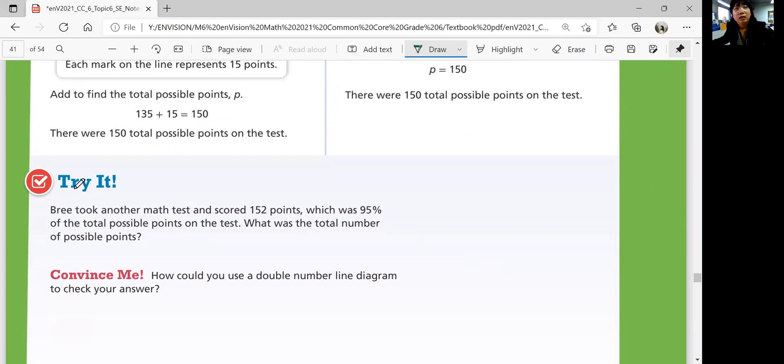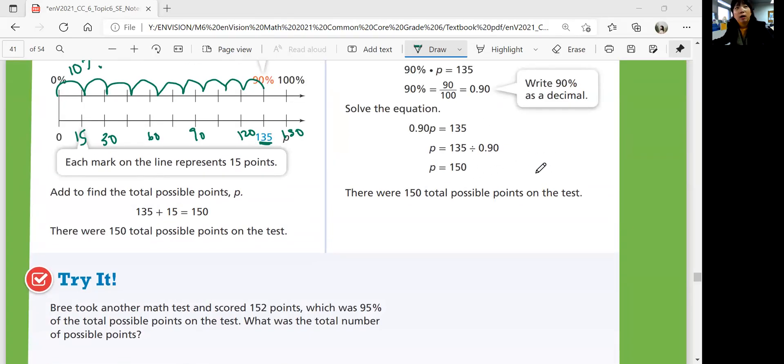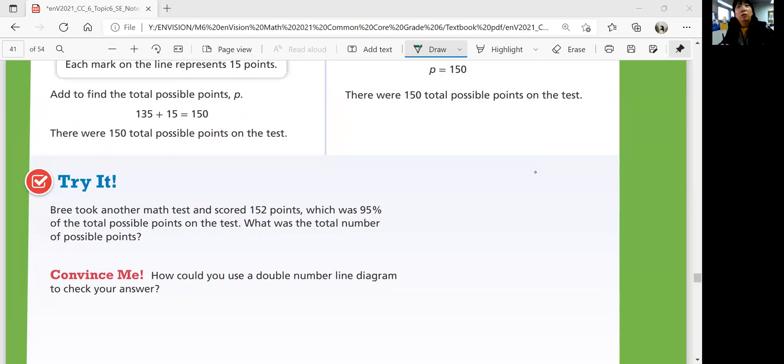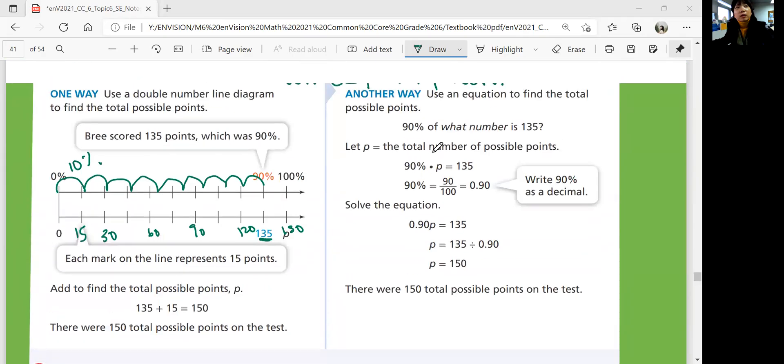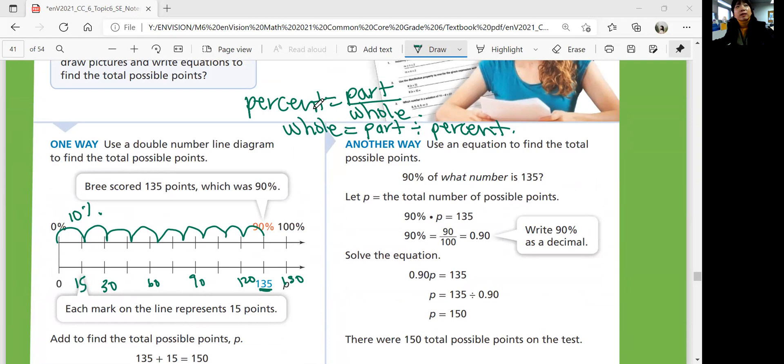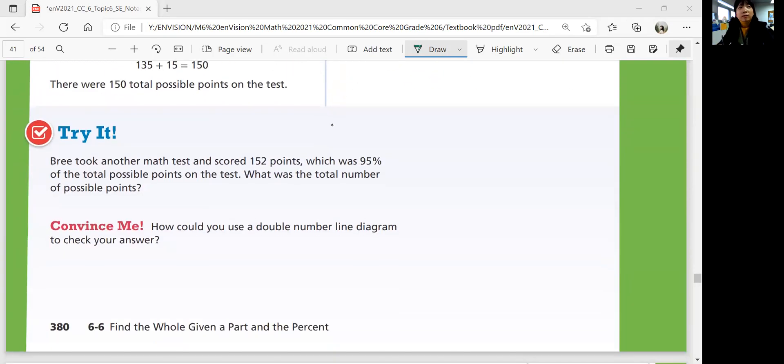Let's see if you can do a try by yourself. So Bri took another math test and scored 152 points. And that was 95% of the total possible points. And this is going to be a different points test. Can you figure out the total number of possible points for this test? So use the same equation here. You can divide the part by the percent. Because if you multiply the whole by the percent, you get the part. So in order to get the whole, you need to divide part by the percent. So 152 divided by 95% is 152 divided by 0.95.